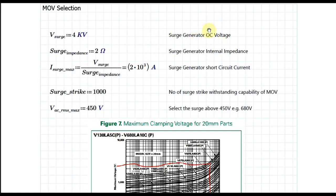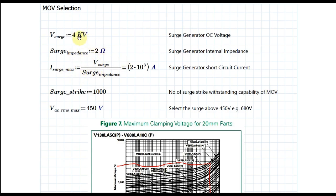If you look at the standard, you can find the impedance of the surge generator. The surge generator internal impedance equals 2 ohms. Now you have to find the surge generator short-circuit current: I_surge_max = V_surge / Z_surge = 4 kV / 2 Ω = 2 kilo-amperes, or 2000 amperes.